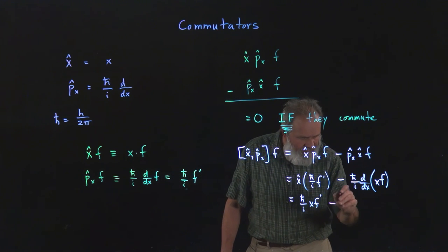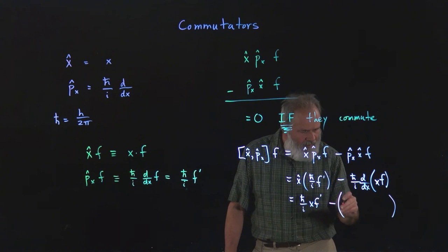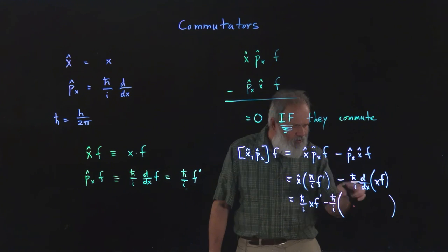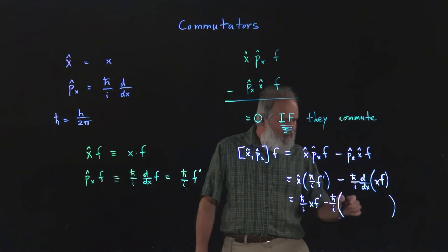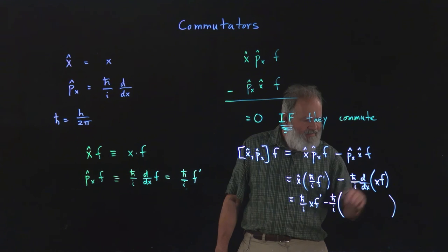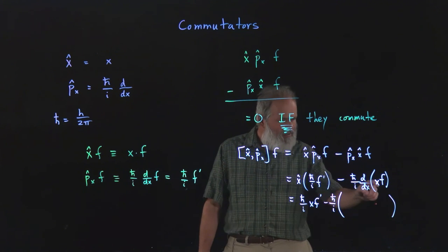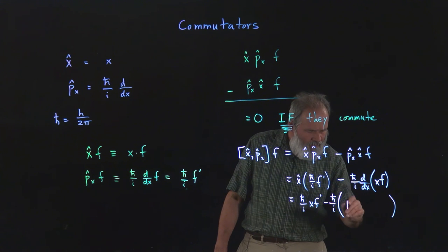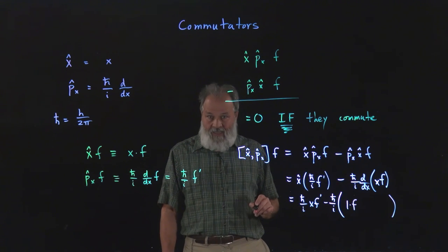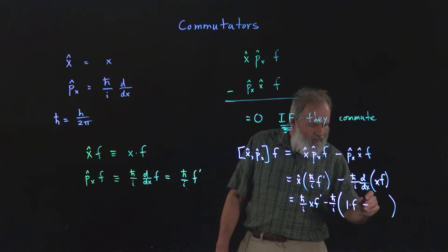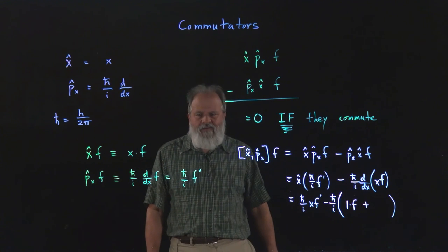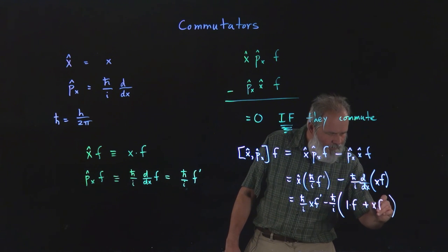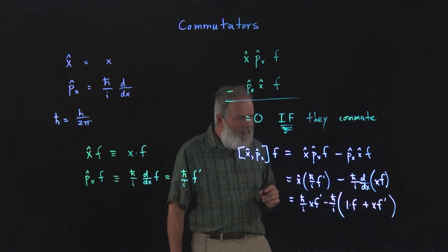So minus, and then we're going to put this in parenthesis and might as well bring out the h bar over i as a constant. So the derivative of x times f. Let's take the derivative of the first term first. So the derivative of x is one times the second function unchanged. And then we're going to take the derivative of f times the original function x.